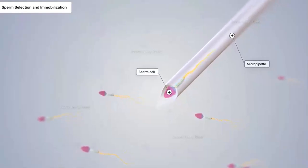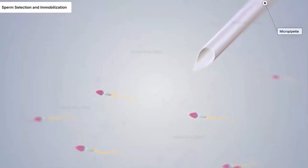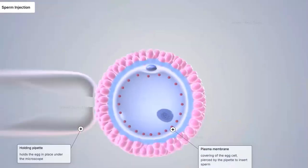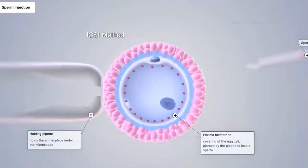Using a high-powered microscope, they select healthy sperm with a normal shape, size, and movement. They are extremely careful, and the process is the most precise procedure in modern medicine. Then they inject the sperm directly into the egg.